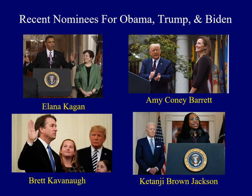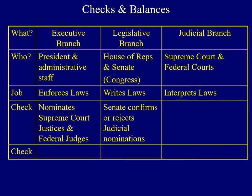President Obama was able to name two people to the Supreme Court, President Trump was able to name three, and Ketanji Brown Jackson was nominated by President Biden to take over once the court resumes in October 2022. While the president has the sole authority to nominate someone, the Senate has the ability to either confirm or reject any judicial nominations — one way that the legislative branch can check both the executive as well as judicial branches.